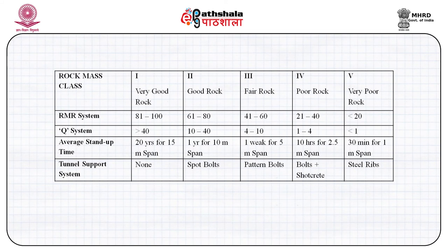Class 4 or poor rock (RMR 21–40, Q = 1–4) has a 2.5-meter span with only 10 hours of stand-up time — there we need pattern rock bolts plus thick shotcrete. Class 5, very poor rock (RMR < 20, Q < 1), even a 1-meter span will fall within 30 minutes — the poorest rock mass condition, where we must install steel ribs at very close spacing.